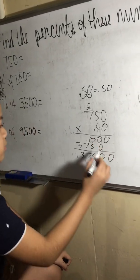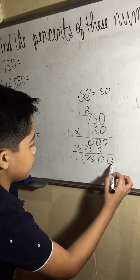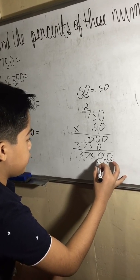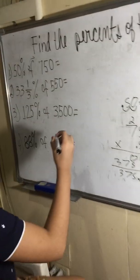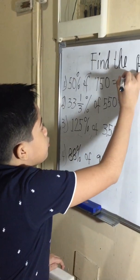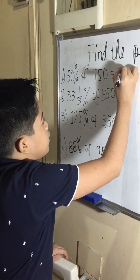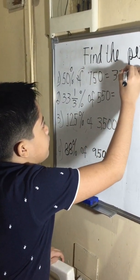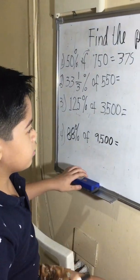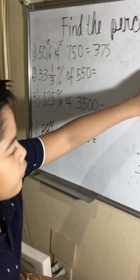Since there's two decimal places, move the decimal point two spaces to the left. So the answer for number one would be 375. So that is 50% or one half of 750.